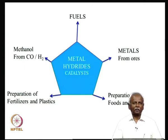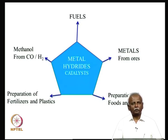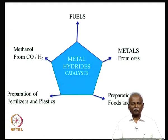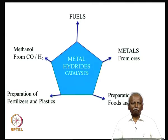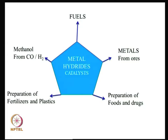In the case of manufacturing fine chemicals, one often uses metal hydrides as catalysts. This is true of bulk chemicals like fertilizers and plastics as well — all of them end up using metal hydrides. Another important place where metal hydrides might be involved is in the generation of metals from metal ores. During the reduction of metal ore from the oxide or sulphide, it is possible that metal hydrides are intermediates.